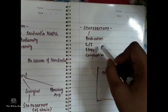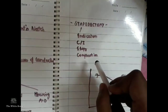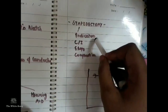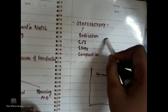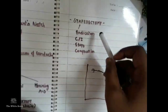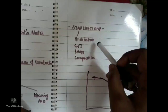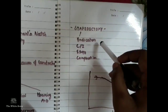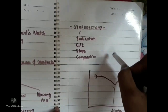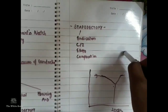Indications for stapedectomy or stapedotomy: there should be at least a demonstrable hearing loss of 30 dB or worse. There should be a conductive hearing loss, since sensorineural involvement means stapedectomy will not help. If both ears are involved bilaterally, it is done on the worse ear first, so the comparatively better ear is not exposed to surgical risk.